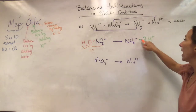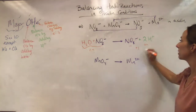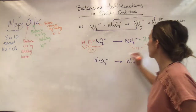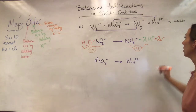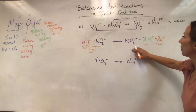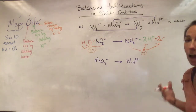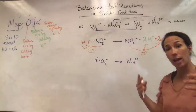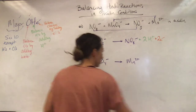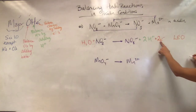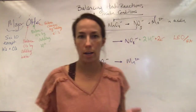Now balance the charges by adding electrons. On the left I have one negative and a neutral — total negative one. On the right I have one negative and two positives — total positive one. Those aren't balanced. So I add two electrons to the right-hand side: now the right side has one negative, two positives, and two negatives, giving negative one. Negative one equals negative one — balanced. This is a loss of electrons, so it's the oxidation half-reaction. The reducing agent is NO2⁻.